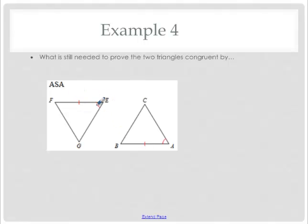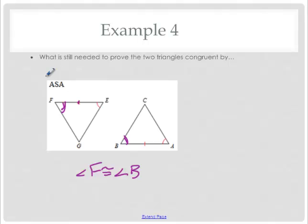For ASA, you need an angle on either side of the congruent side. Since this is the side that's congruent, I need angle F and angle B. So if angle F is congruent to angle B, these triangles are congruent by angle, side, angle. Don't panic — this isn't the last time we're doing these four properties. We're going to be spending at least a full week working on these proofs and these four properties.